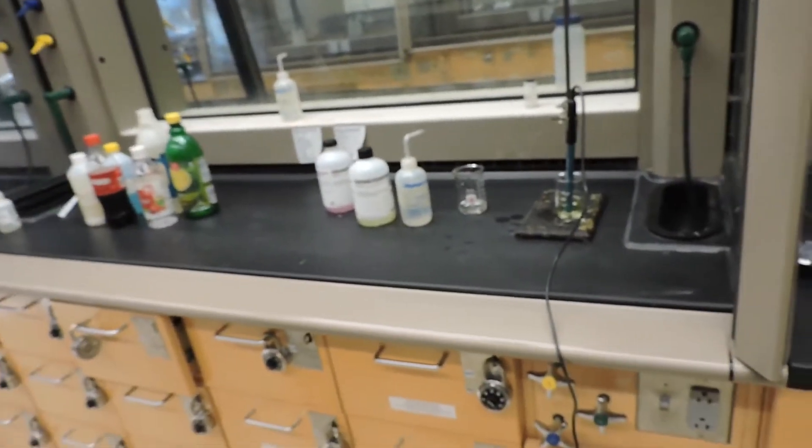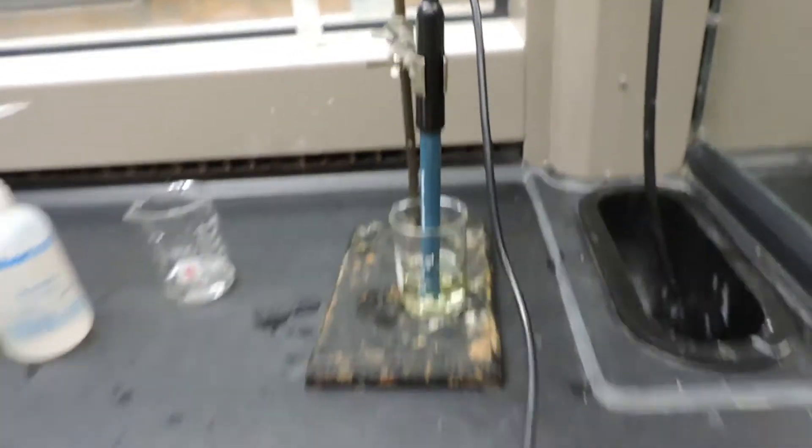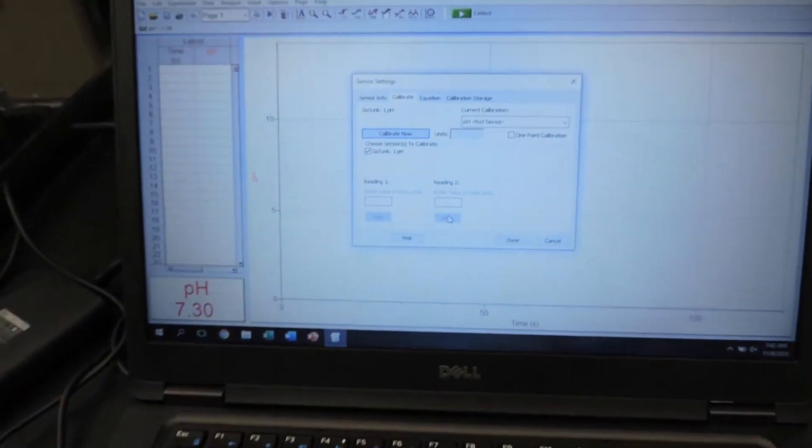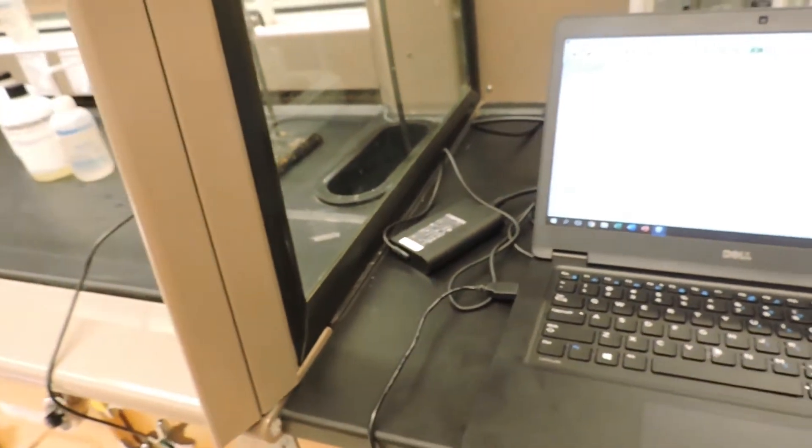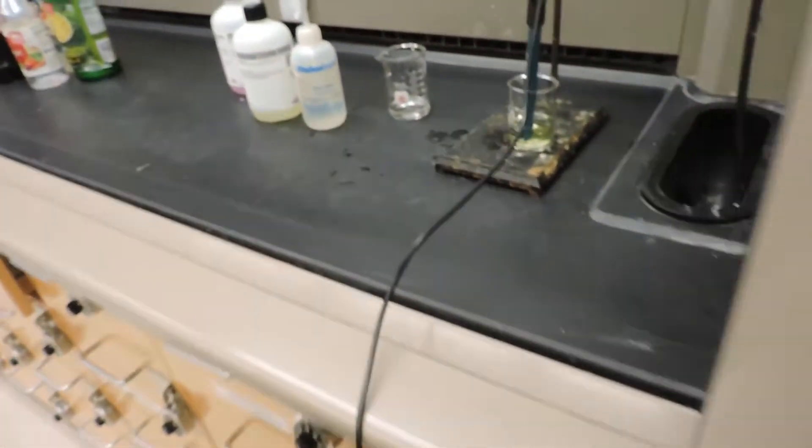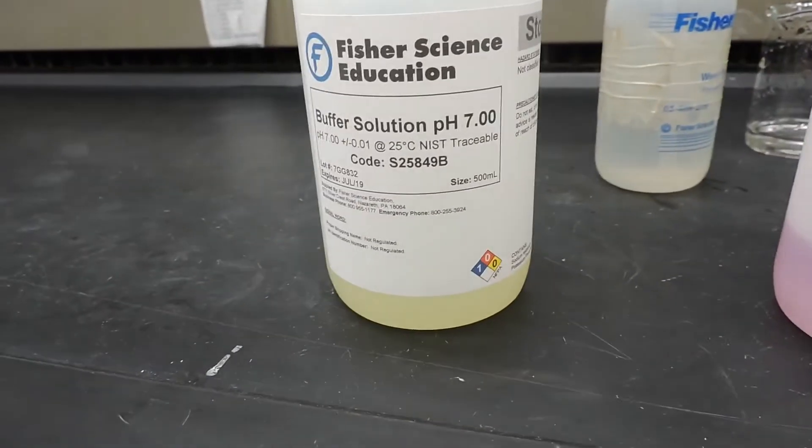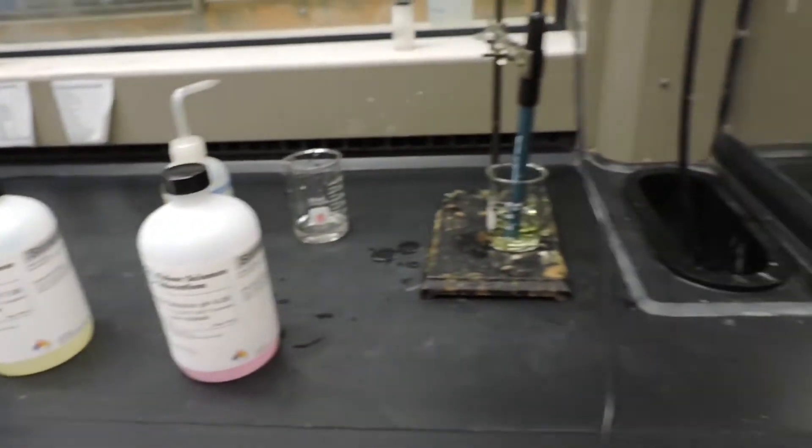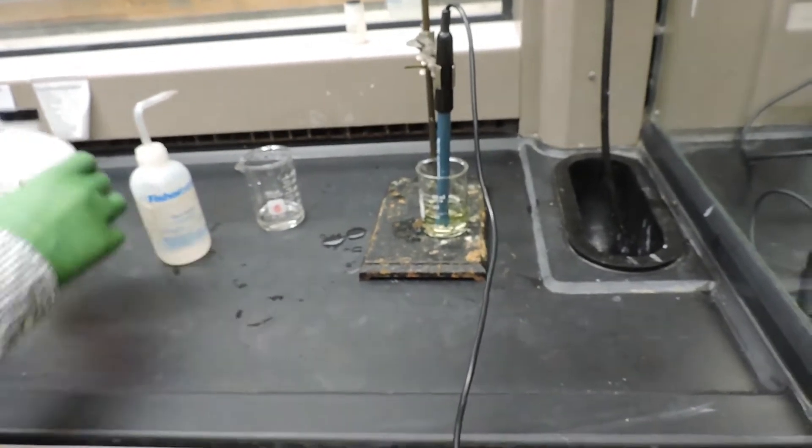First we're going to calibrate the pH meter. This is the pH meter here, connected to the Logger Pro software on this desktop, so that's how we'll be reading the pH for today. We're going to calibrate our probe using a two-point calibration. We have two solutions, a pH 4 and a pH 7. We're going to immerse the probe in those solutions and calibrate them according to what the pH should be.